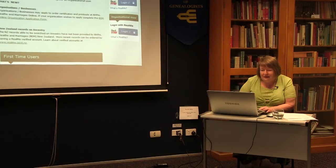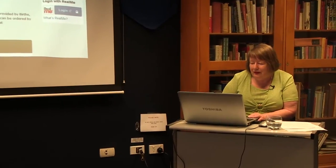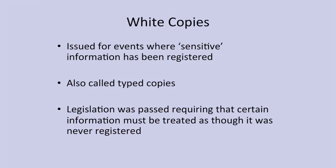If you want to order a certificate within the non-historical period, you need a Real Me identity in New Zealand to get your certificate easily. A word also about white copies: they've been issued for events where sensitive information has been registered, such as an adoption or where somebody has been declared illegitimate on the certificate. They're also called typed copies, because legislation was passed requiring that this information must be treated as though it was never registered — so you will never be able to get that information in a printout.